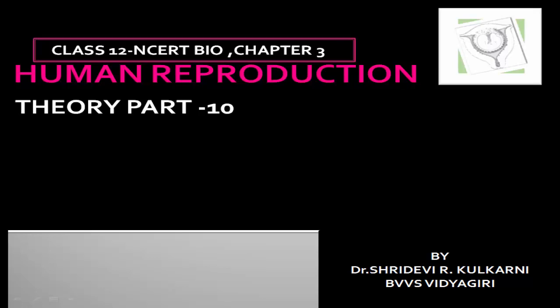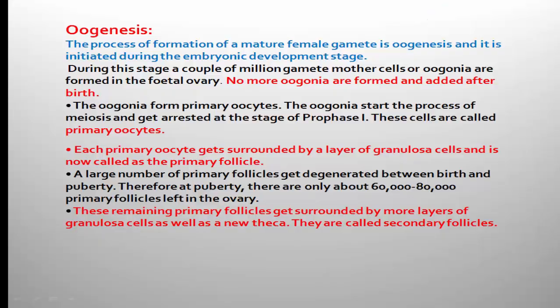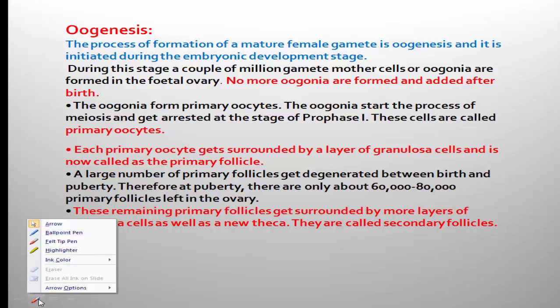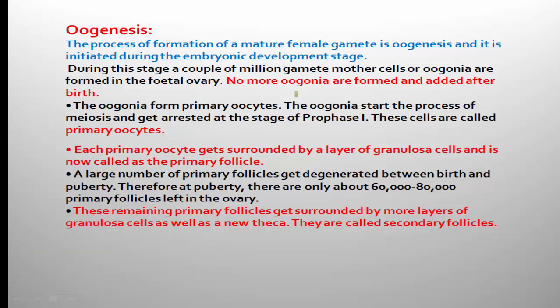In this video, I am continuing the next part of human reproduction — it is oogenesis. Like spermatogenesis, the type of gametogenesis occurring in females is oogenesis. The definition: the process of formation of a mature female gamete, that is the egg, is called oogenesis.